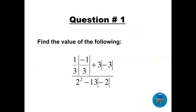Question 1: evaluate (1/3)|−1/3| − (1/3) + 3|−3|, all divided by 2² − 13|−2|.